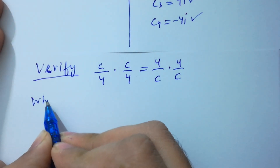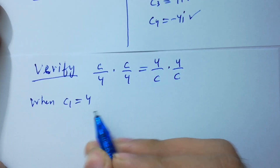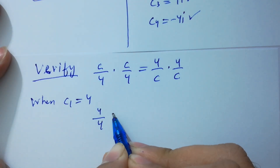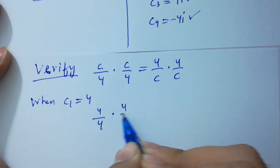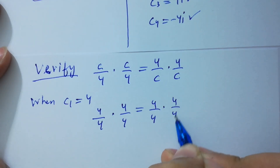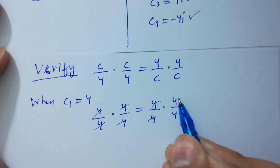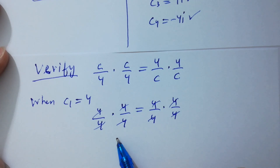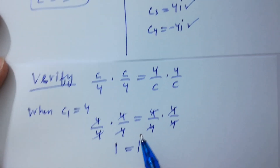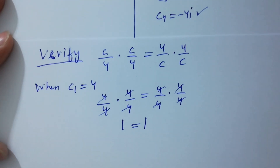When c1 equals 4, we have (4/4) times (4/4) equals (4/4) times (4/4). The 4s cancel and we get 1 times 1 equals 1, so 1 equals 1. It means c1 equals 4 is correct.